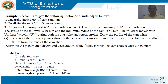Using this data, first we need to construct the displacement diagram, velocity diagram, and acceleration diagram. Then using the data from the displacement diagram, we can construct the cam profile under two conditions: condition (a) — axis of the follower passing through the axis of the camshaft, and condition (b) — axis of the follower offset by 20 millimeters from the axis of the camshaft.